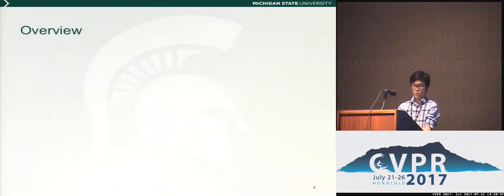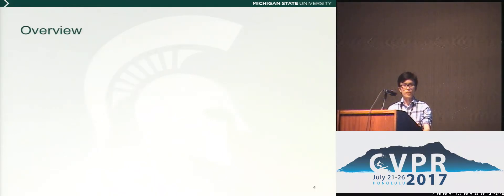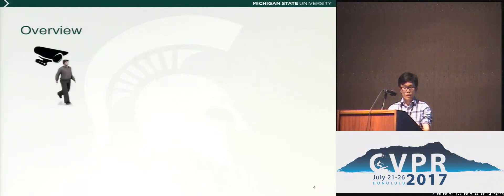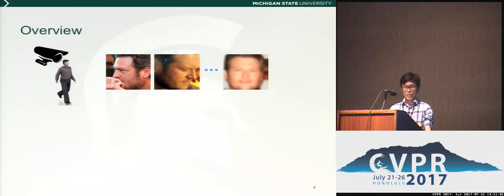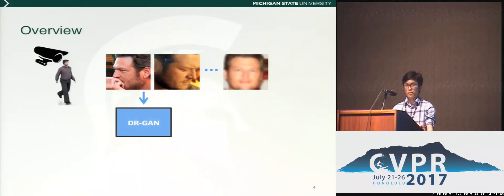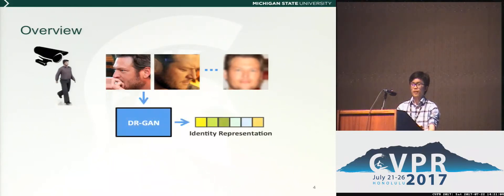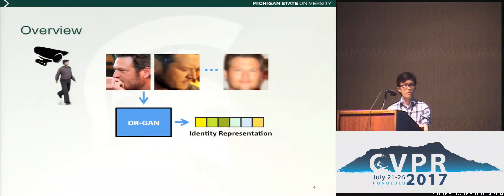In this work, we propose a representation learning GAN for pose-invariant face recognition. Given multiple images of the same subject, which can come from surveillance cameras for example, our IDEA GAN can learn a unified identity representation, which is helpful for recognition purposes.